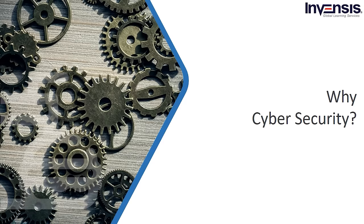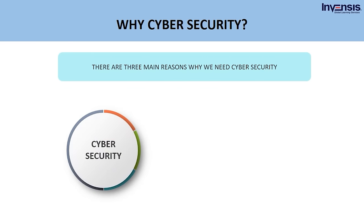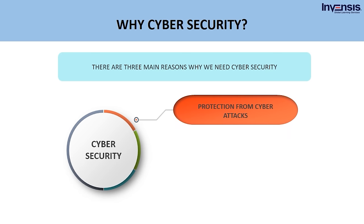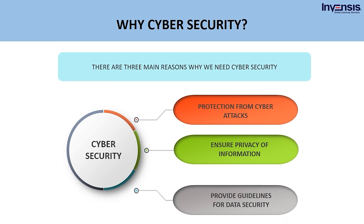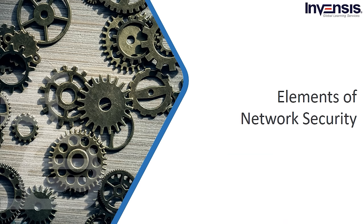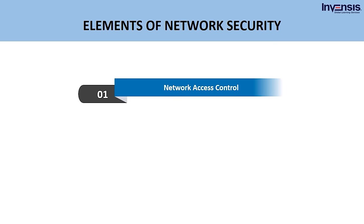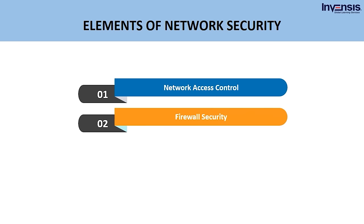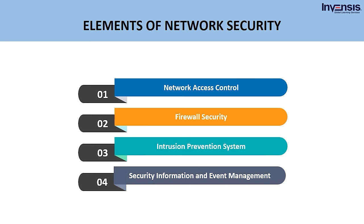Let us now understand why we need cybersecurity. There are three main reasons: the first is protection from cyber attacks, the second is to ensure privacy of information, and the third is to provide guidelines for data security. Let us now look into the elements of network security. There are four elements: network access control, firewall security, intrusion prevention system, and security information and event management, or SIEM.